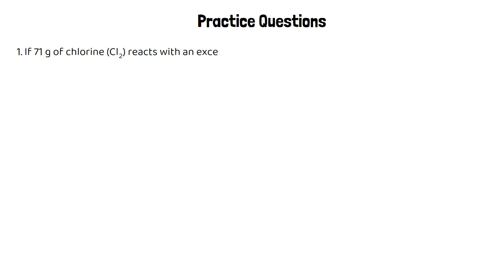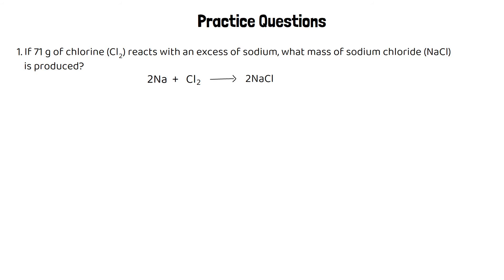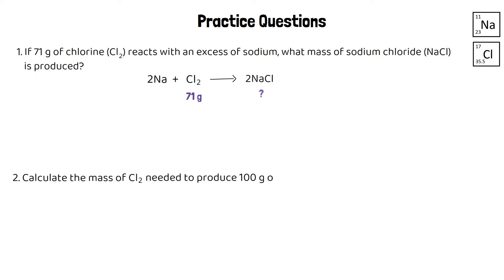Here are two practice questions involving different molar ratios. First: if 71 grams of chlorine reacts with an excess of sodium, what mass of sodium chloride is produced? The balanced symbol equation is shown. Second: calculate the mass of chlorine needed to produce 100 grams of sodium chloride. Using the same equation, we want to make 100 grams of sodium chloride and need to know how many grams of chlorine are required. Pause the video and give these questions a try.